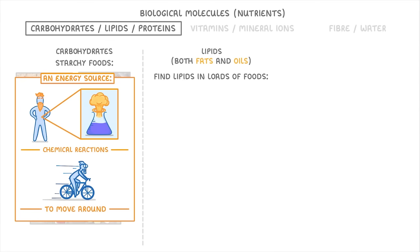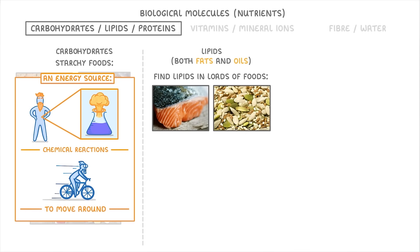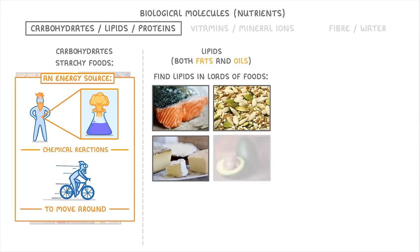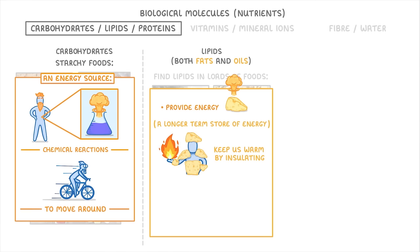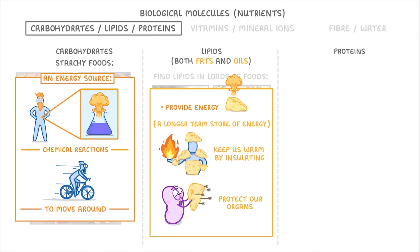You find lipids in loads of foods, but particularly in oily fish, nuts and seeds, dairy products and avocados. Their main role is to provide energy just like carbohydrates, but often they act as a longer-term store of energy because we can store lots of fat for use later. They also do lots of other useful things though, like keep us warm by insulating us and protecting our organs.